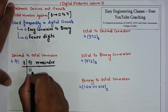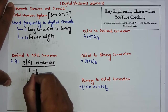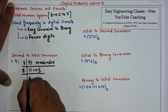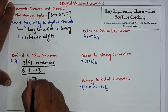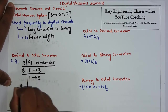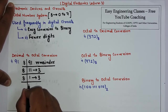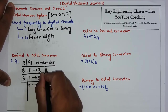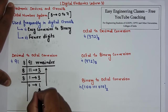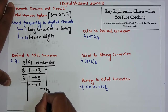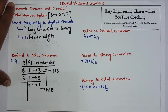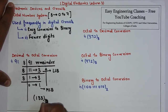We divide by 8. The remainder — 91 minus 88 is 3. Dividing again by 8, the remainder is 3. Dividing once more by 8, the remainder is 1. We write remainders from bottom to top, noting the most significant bit and least significant bit. The result is 1, 3, 3.